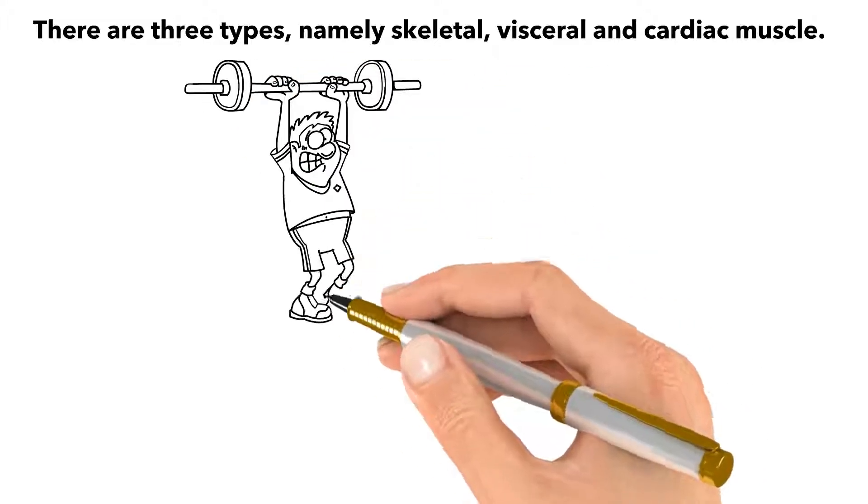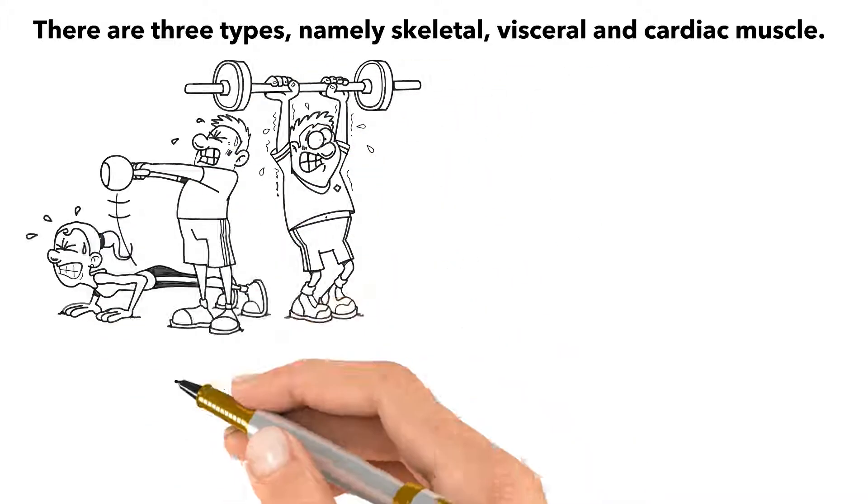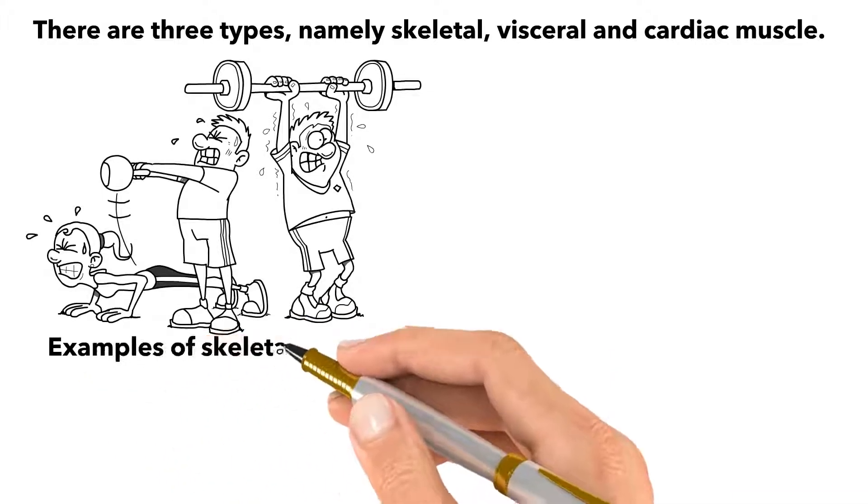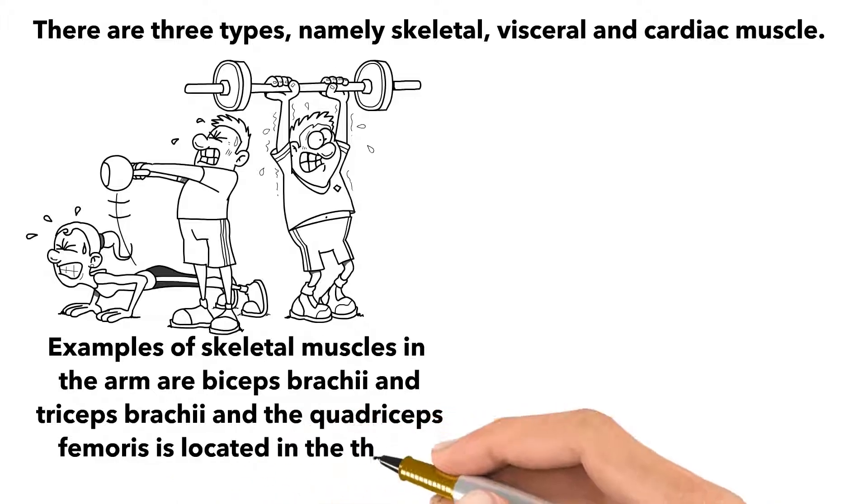Skeletal muscles cover bones and give our body shape, and we consciously control them. Examples of skeletal muscles in the arm are biceps brachii and triceps brachii, and the quadriceps femoris is located in the thigh.